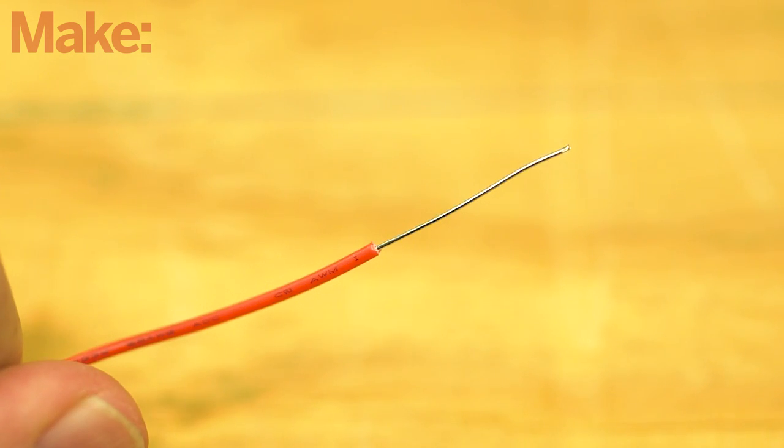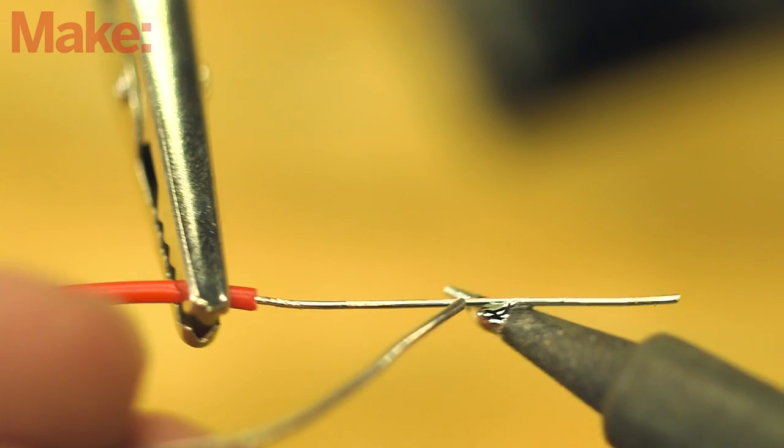Strip about one inch of the insulation from the ends of the wires to be spliced, and then tin the leads with solder.